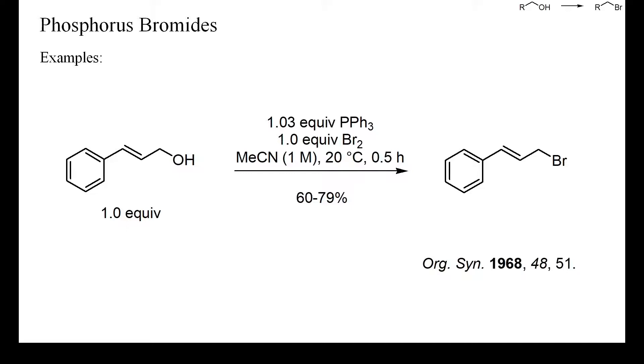If compared to phosphorus tribromide or phosphorus pentabromide, mixtures of triphenylphosphine and brominating reagents show a better solubility in organic solvents and yields are sometimes higher than with purely inorganic phosphorus bromides. The big disadvantage of triphenylphosphine is that this reagent and its oxide can be difficult to remove from the product.